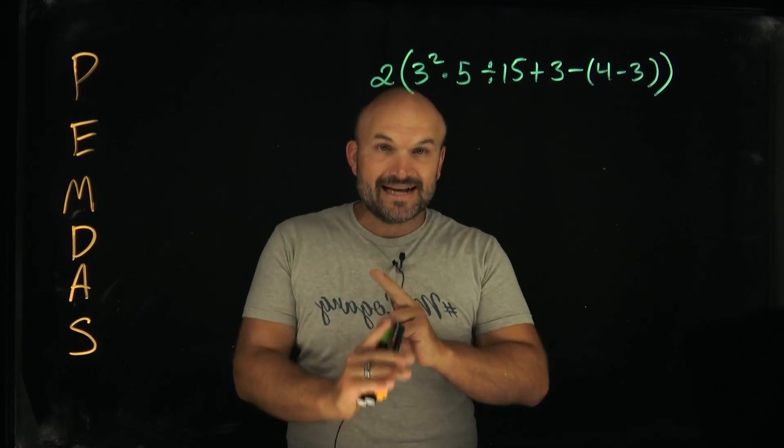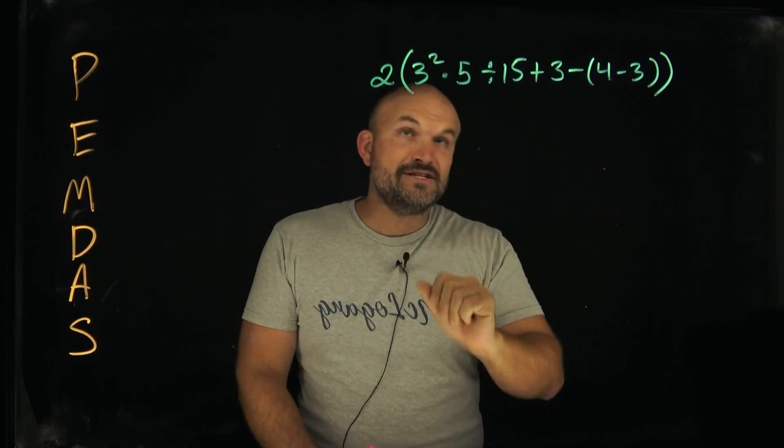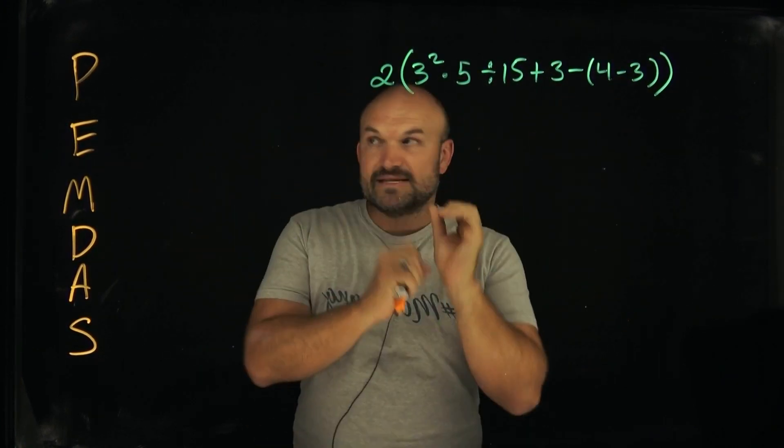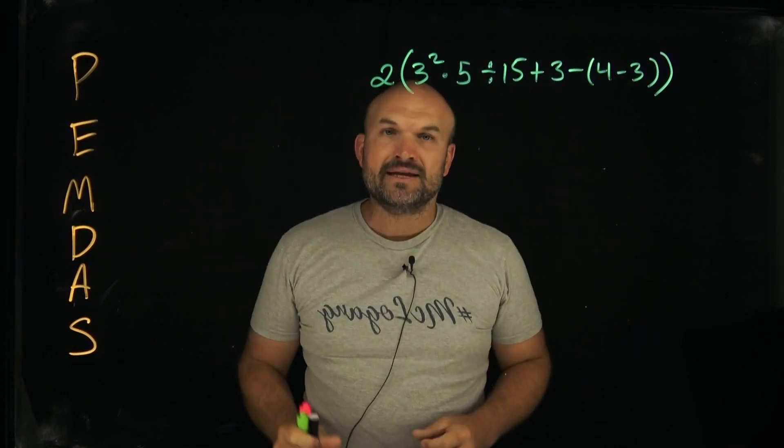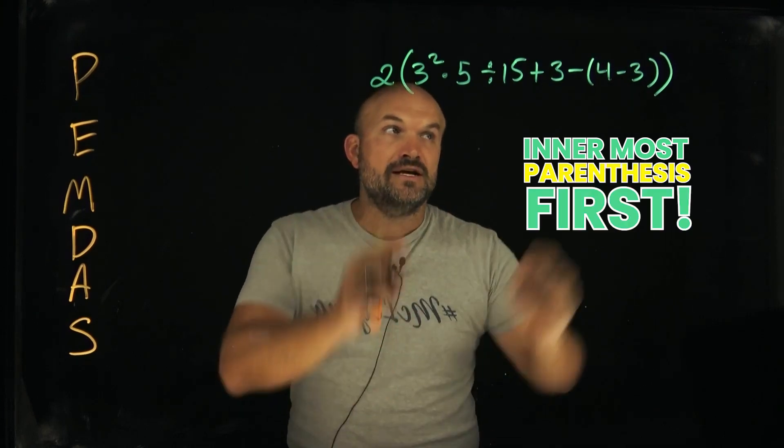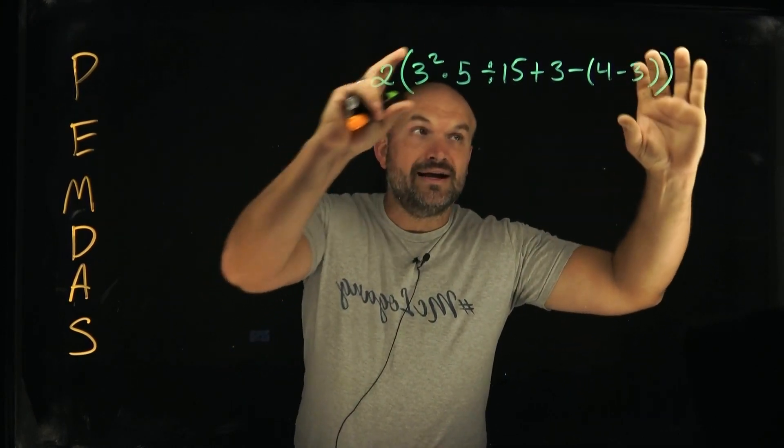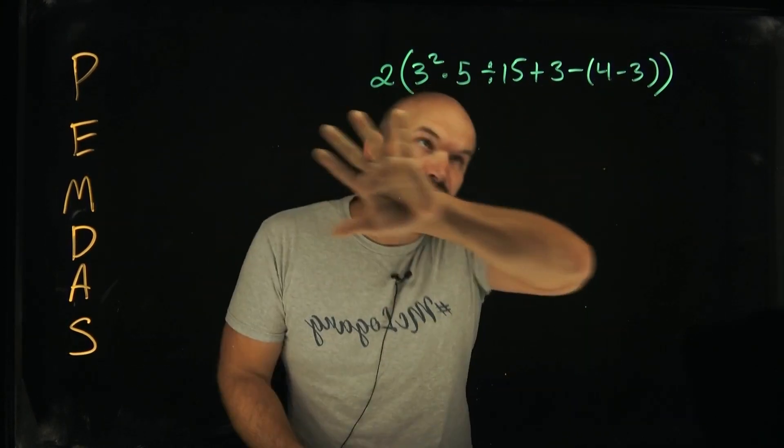The first one is going to talk about parentheses. You can see here we have two parentheses: the four minus three, and then the big parentheses. What's important to recognize about parentheses or grouping symbols is we're always going to want to do the innermost parentheses first. We have big parentheses, which is outer, and then the smaller parentheses here. Let's rewrite this.